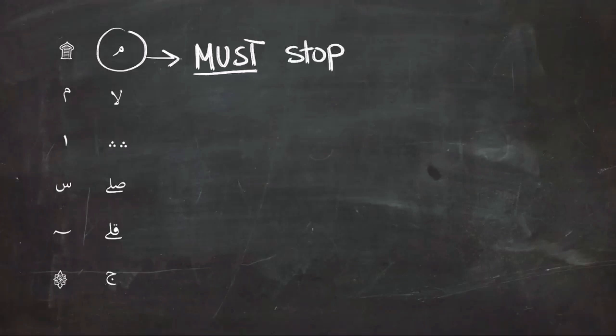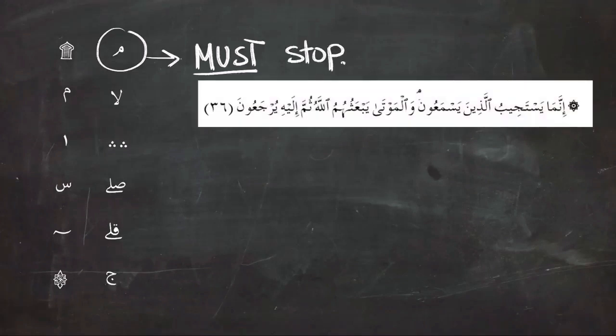We're going to start with the first one, and it's a symbol that looks like meem. It means you must stop while reading, otherwise the meaning of the ayah or verse will change. In this example, you should stop at the symbol by reading. So we have to stop at the symbol of meem.